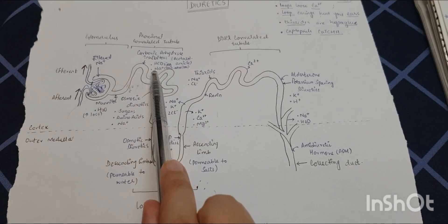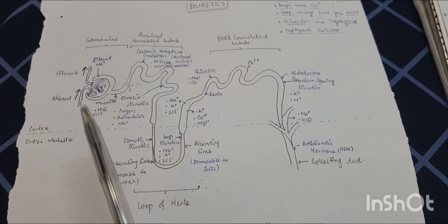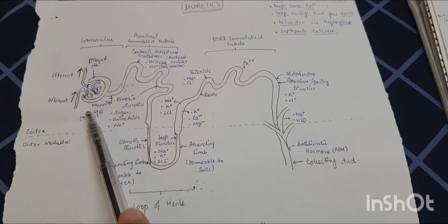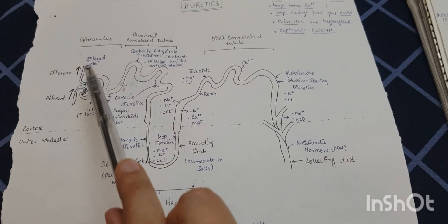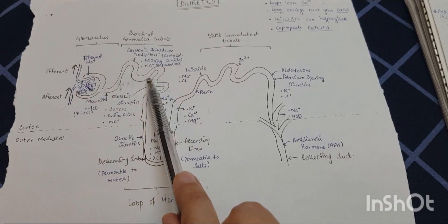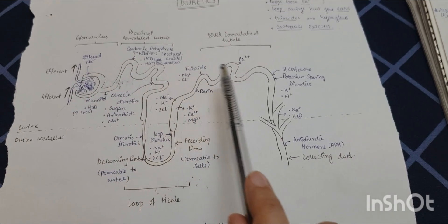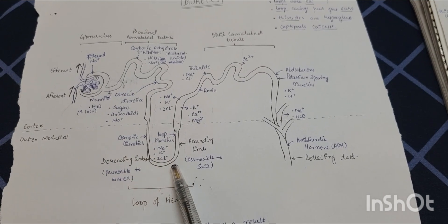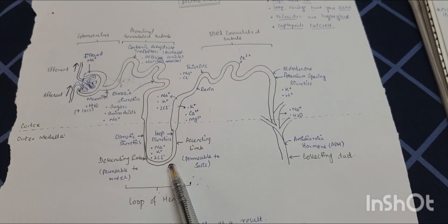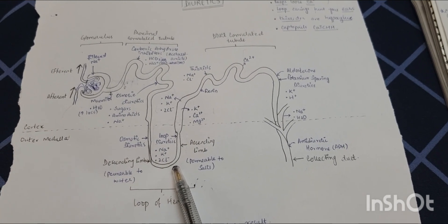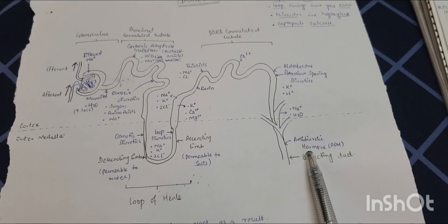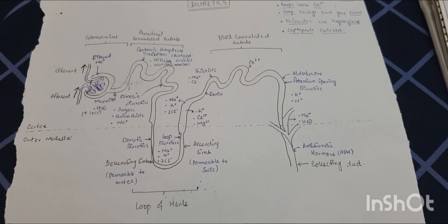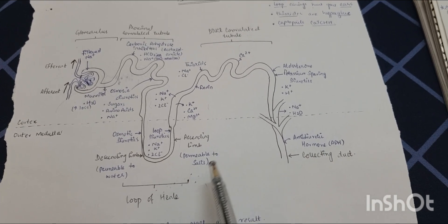After the loop of Henle, there is the distal convoluted tubule, and then it all ends at the collecting duct. Part of the nephron is in the cortex and part is in the outer medulla. The main parts in the cortex are the glomerulus, proximal convoluted tubule, and distal convoluted tubule, while in the outer medulla there is the loop of Henle and the collecting duct.